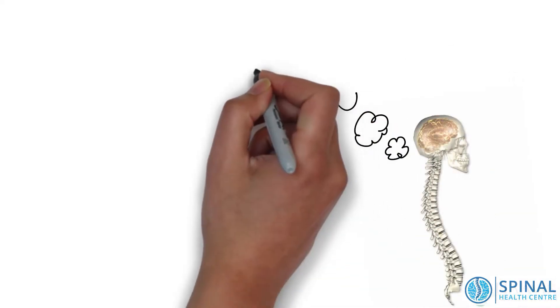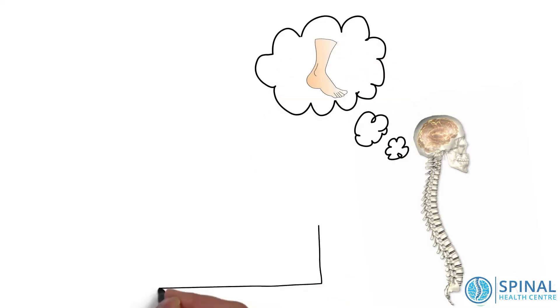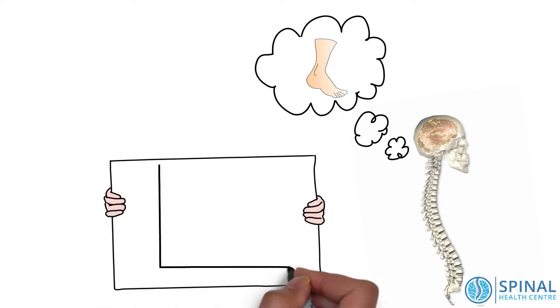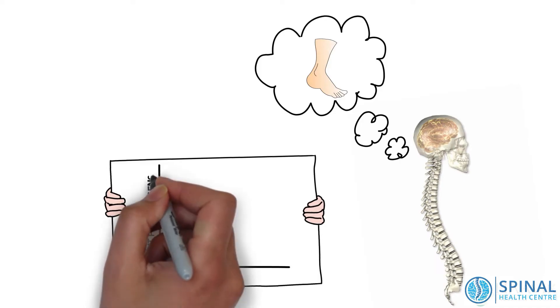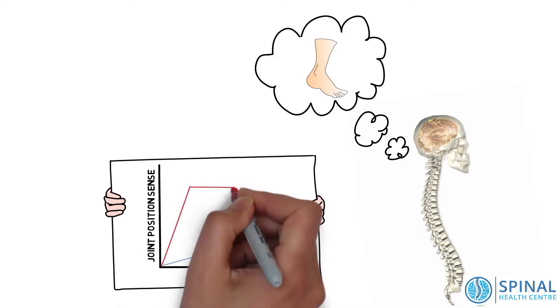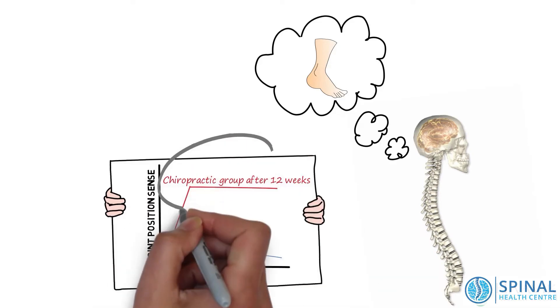Another outcome measure the researchers looked at was joint position sense in the ankle. They found that people who received 12 weeks of chiropractic care became significantly better at knowing where their foot was compared to those who did not get adjusted. This is really important because if your brain doesn't know what's going on in your ankle, you may not be able to accurately sense what's happening if you're slipping or tripping. This may make it harder to recover from a slip and stop yourself from falling.